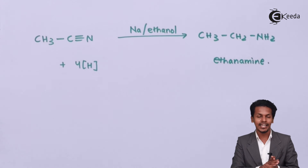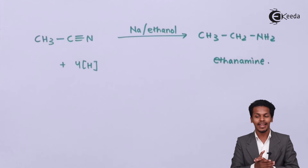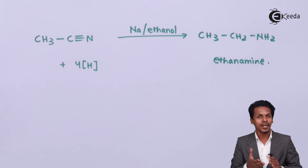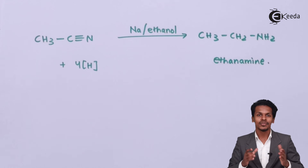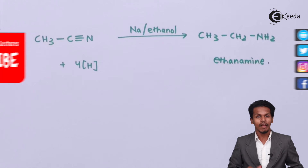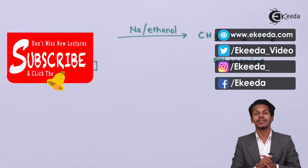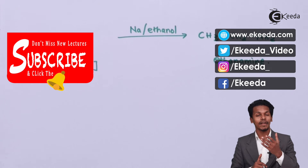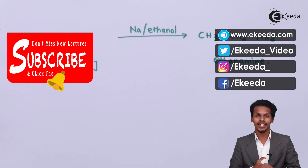So this is how we convert an alkyl cyanide into a primary amine. Thank you for watching. I hope you understood this clearly. Don't forget to subscribe and I will see you next time.